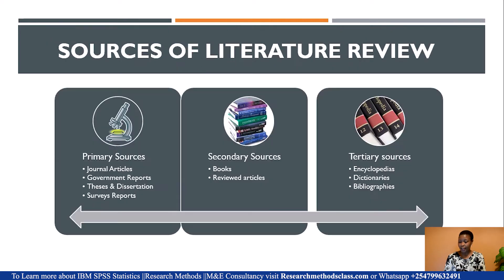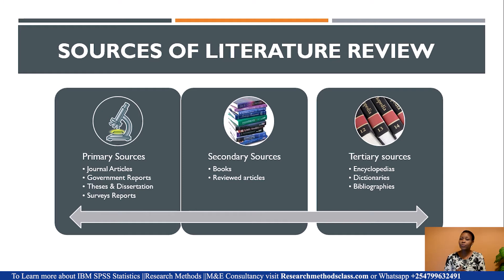We are going to start with the sources of literature. We mainly have three sources. The first is primary sources — literature from journal articles, government reports, theses and dissertations, and survey reports. Then we have secondary sources, for instance reviewed articles and books. Then we have tertiary sources, for instance encyclopedias, dictionaries, and bibliographies.